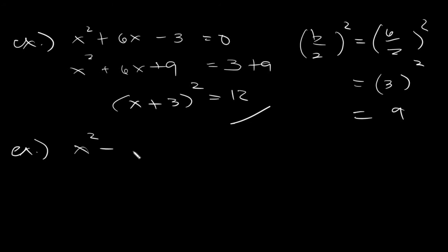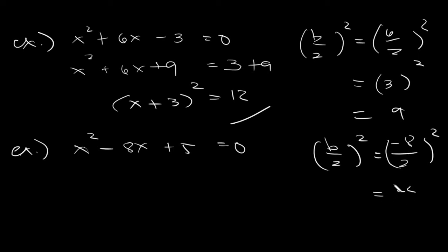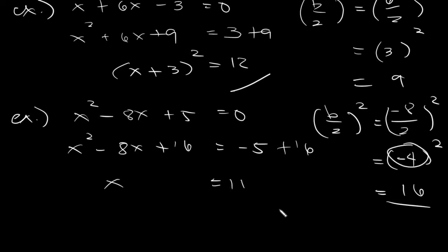Another example: x squared minus 8x plus 5 equals 0. We get b over 2 squared: negative 8 over 2 squared. Negative 8 divided by 2 is negative 4, and negative 4 squared is positive 16. We transfer plus 5 to the other side as minus 5. We add 16 on both sides, so the right side becomes negative 5 plus 16 equals positive 11. We factor the left side: x minus 4, all squared, equals 11.